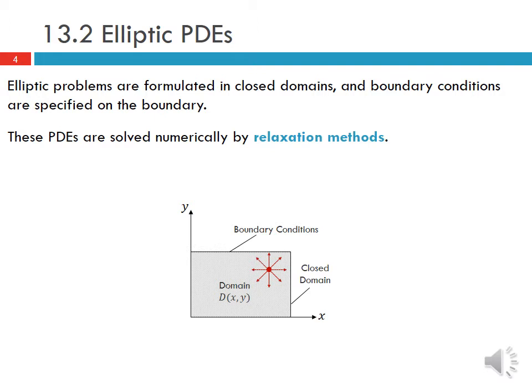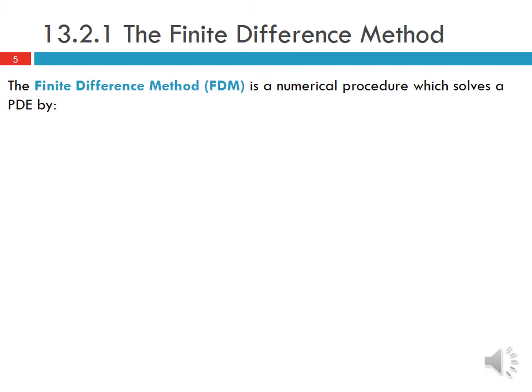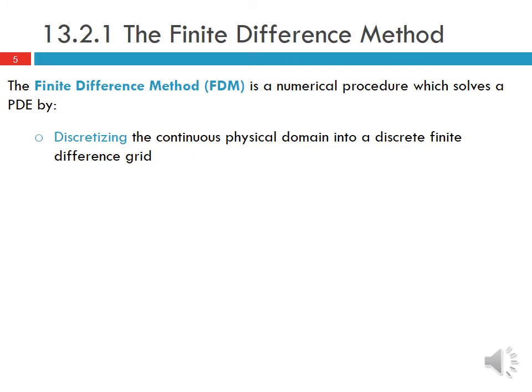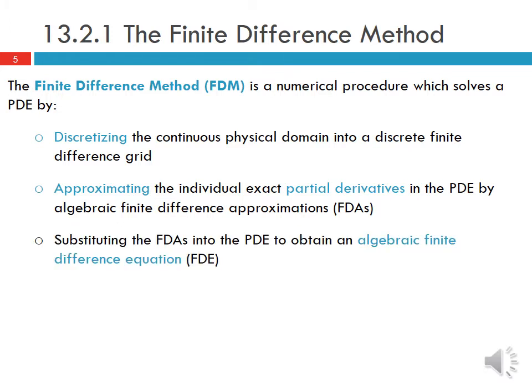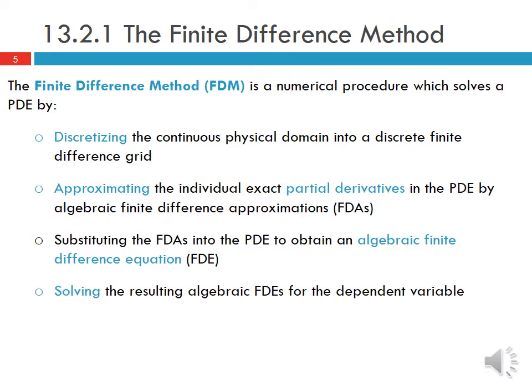These PDEs are solved numerically by relaxation methods. The finite difference method is a numerical procedure which solves a PDE by discretizing the continuous physical domain into a discrete finite difference grid, approximating the individual exact partial derivatives in the PDE by algebraic finite difference approximations (FDAs), substituting the FDAs into the original PDE to obtain an algebraic finite difference equation (FDE), and then solving the resulting FDEs for the dependent variable.